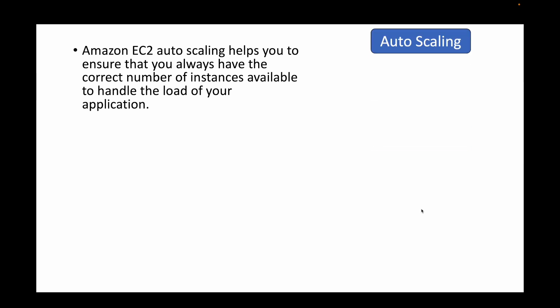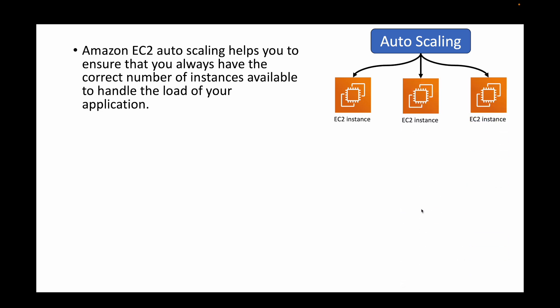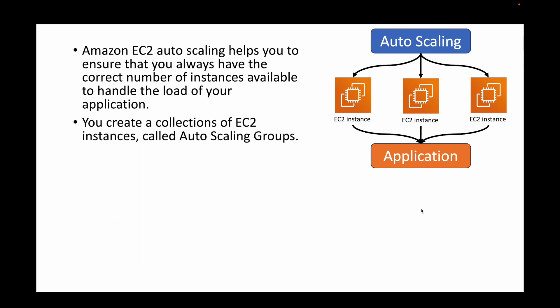Auto scaling groups help you ensure that you always have the right number of instances for your application. This auto scaling component will automatically maintain that number of instances. Whatever application we are running, to handle the load we need the right number of capacity — the right number of instances. For example, if my application needs 10 EC2 instances, my auto scaling group will handle that and make sure those 10 instances are available.